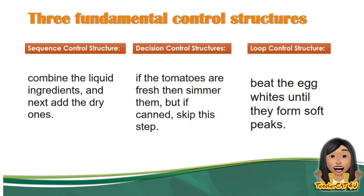Next, we have the loop control structure. A sample here is: 'Beat the egg whites until they form soft peaks.' This means you repeatedly beat the egg whites until the required texture is achieved.